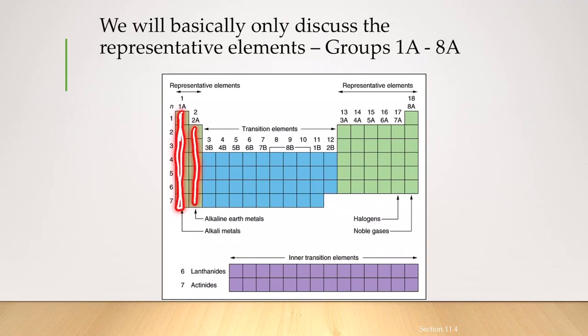Whereas when you take the second column, which are called the alkaline earth metals, they can donate a total of two electrons and become a dipositive ion. If you look into noble gases, noble gases have a tendency to accept only one electron.